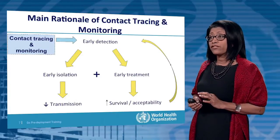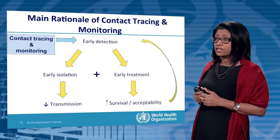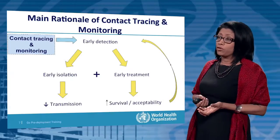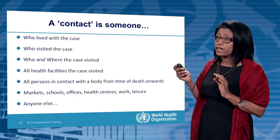The main rationale for contact tracing and monitoring is early detection. Early detection has two important outcomes: first, early treatment, giving the patient a greater chance of survival and being accepted back into the community; second, early isolation, which reduces transmission from that person to others and therefore brings the outbreak under control. This is the rationale and purpose of contact tracing.